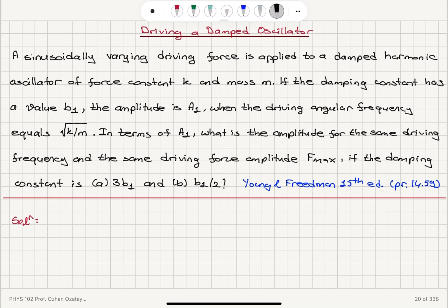So first of all, let's recall that for a driven damped harmonic oscillator, we have the amplitude equaling f_max divided by m, square root of omega squared minus omega zero squared squared, plus b omega over m squared. Omega equals omega zero is the natural frequency, resonance frequency, that is square root k over m for a spring.